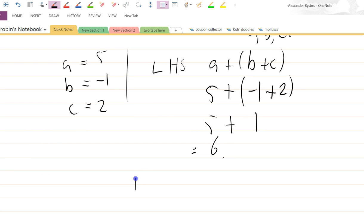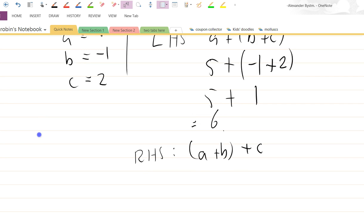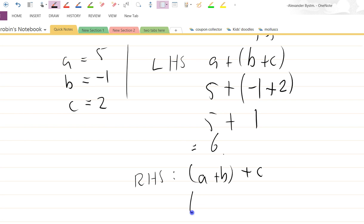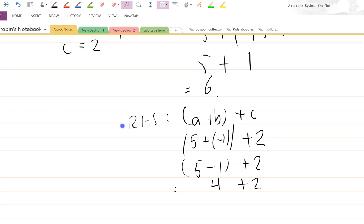Now let's do the right-hand side. A plus B first plus C. See how, when I'm trying to evaluate this, I'll just write down the equations again. Just write it down. It doesn't hurt to write things down. OK, so A plus B is five plus, in brackets, minus one, plus two for the C, which is five minus one, plus two, which is four plus two, which is six.